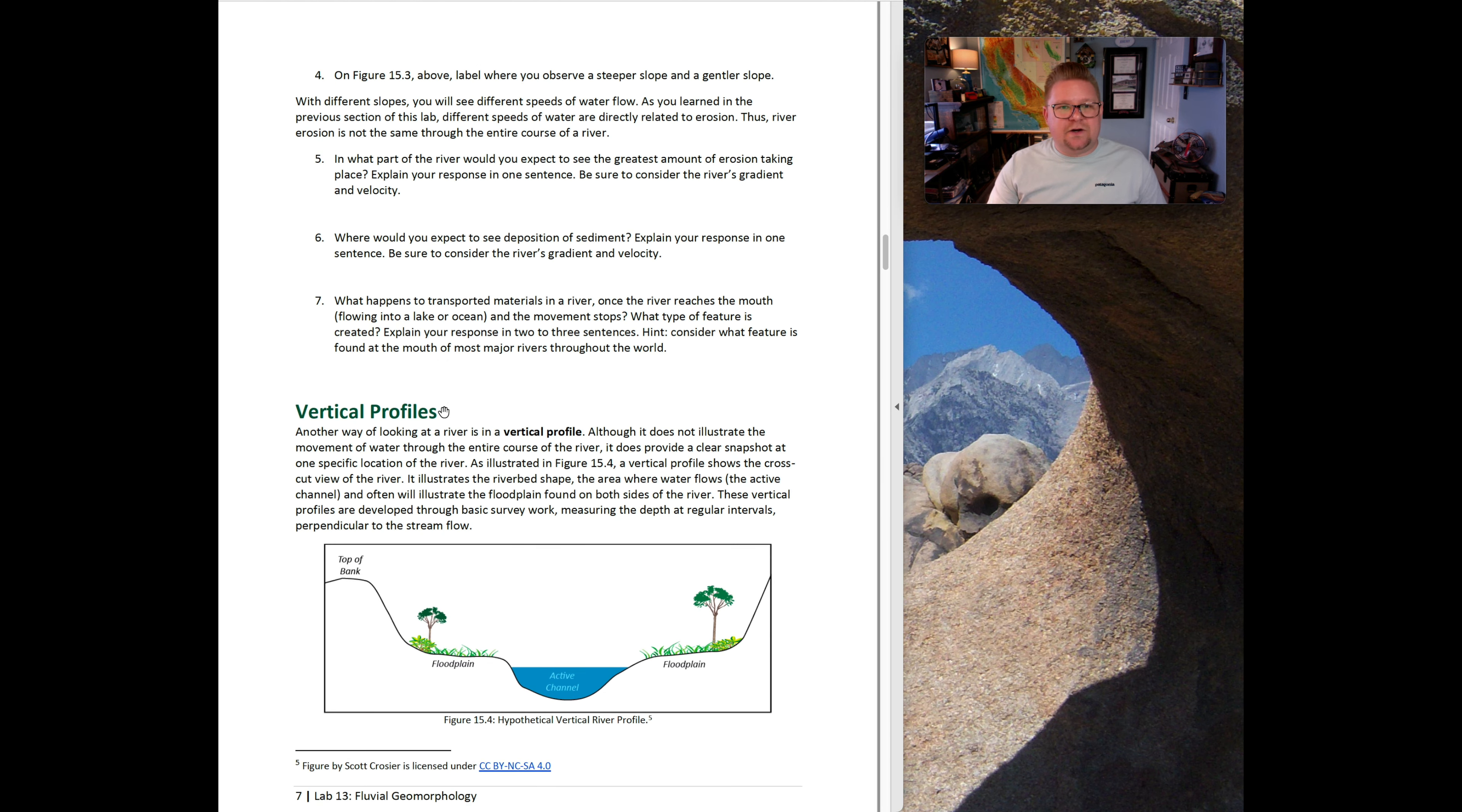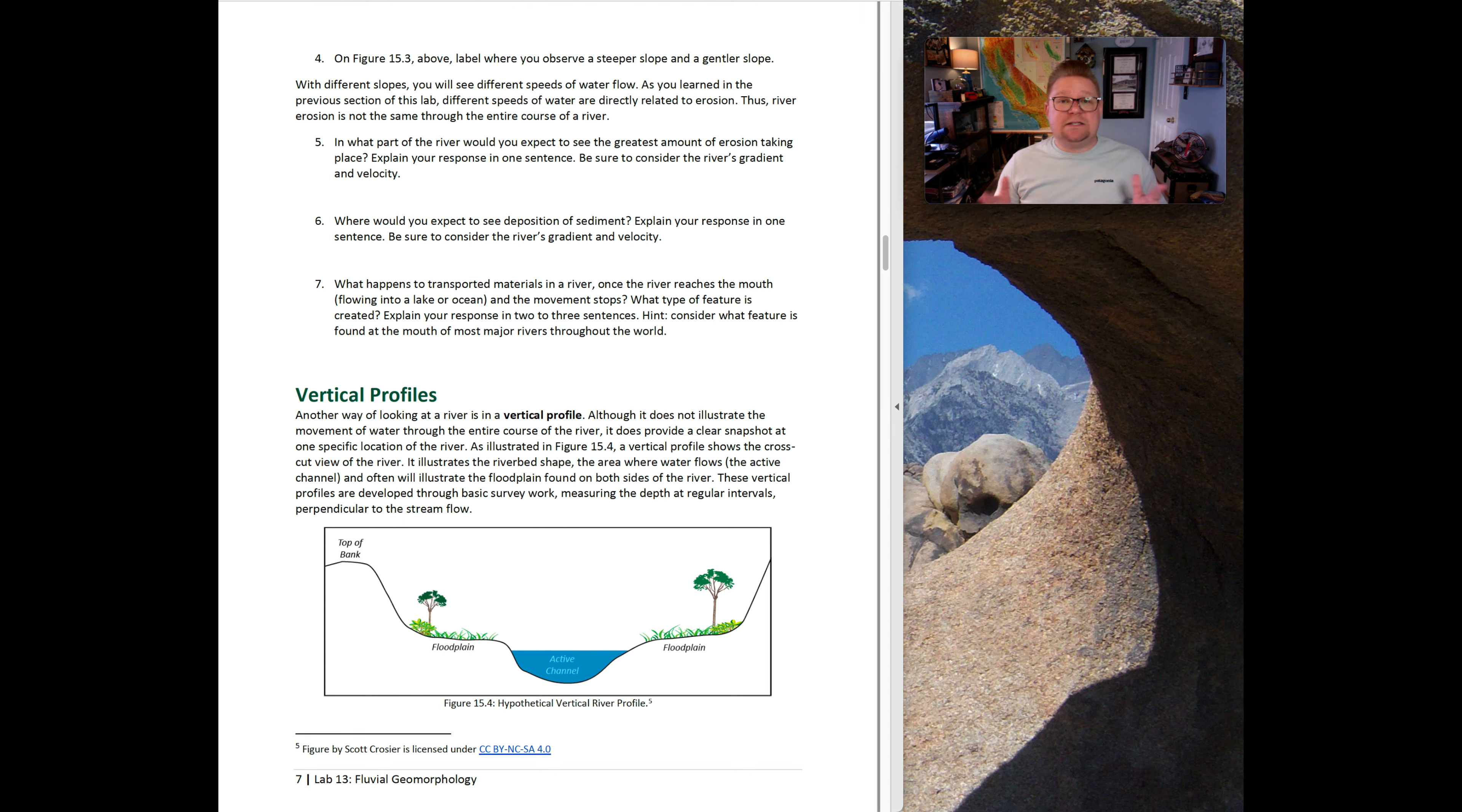Question five says in what part of the river would you expect to see the greatest amount of erosion taking place? Explain your answer. Another word we use for that is called incision, where rivers will actively incise or cut down. We often find that rivers cut in a V shape where the energy is focused at the bottom and in the center. We find that does and can change, especially if the river is making a sharp turn. Question six asks where would you expect to see the deposition of that sediment? Question seven asks what happens to transported materials in a river once the river reaches the mouth, flowing to a large lake, ocean, or body of water? What type of feature do you think is created? When that material reaches a large body of standing water, it loses its energy. The stream stops flowing because it enters still water. We call it dumping its load. The river will dump its load and create a very distinct teardrop-looking feature.